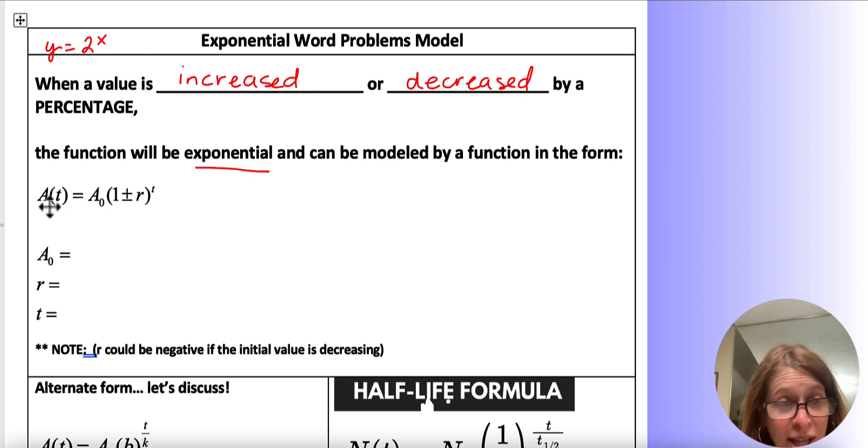We're going to use A of t, the amount at t time of A sub 0, which is our initial amount. Sometimes when we're talking about like financial amounts, we might call it the principal, the principal amount. We might call it the starting amount, right? Basically everything, the original that you started with.